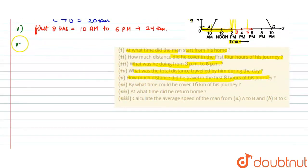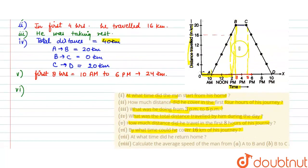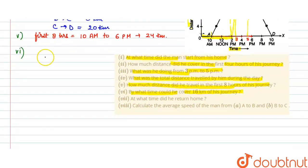Now, sixth part of the question. Sixth part is asking: By what time would he cover 16 km of his journey? Let's see, 16 km we already calculated. He covered 16 km distance at 2 PM, right? So how many hours? We can write 2 PM.